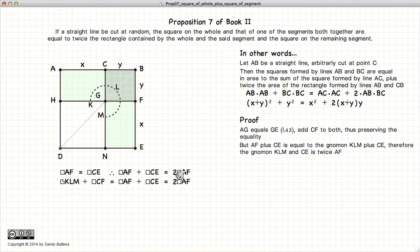This plus this is equal to KLM plus an additional CF. So KLM plus CF is equal to twice AF.